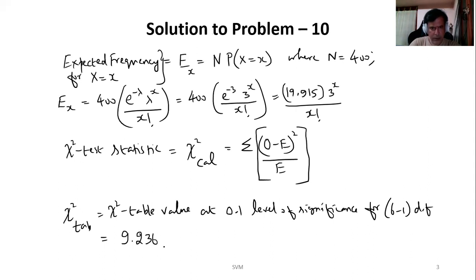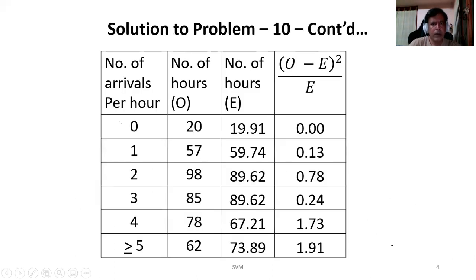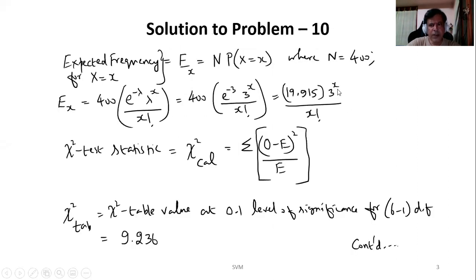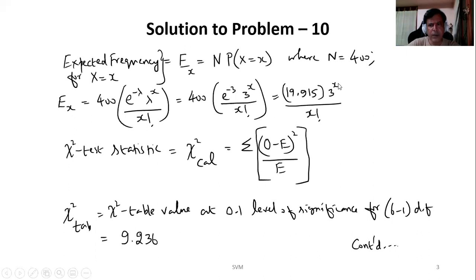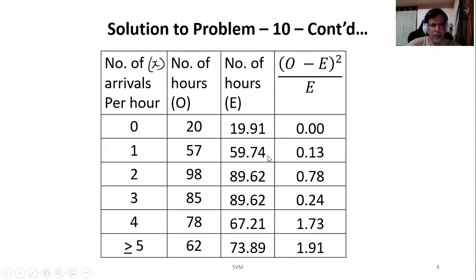Now in order to calculate this chi-square test statistic, we'll create one table. We have been given this data; first two columns are already available in the data. This third column we calculate by substituting: first x for 0, 3 power 0 will become 1, 0 factorial is also 1, so you get 19.915. Next you will be substituting x for 1: it will become 3 power 1 by 1 factorial, which is 3, so 3 into 19.915, that is what comes here. Next substituting 2 you get this value, substituting 3 you get this value. Likewise we do all calculations.